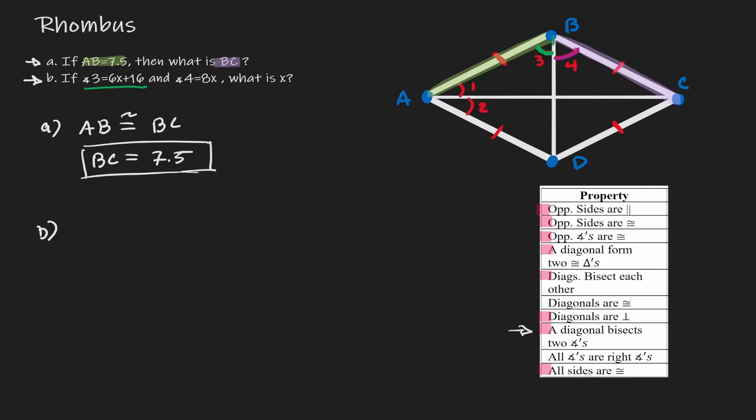If we know that this diagonal bisects angle B, then we know for a fact that angle 3 is going to be congruent to angle 4, and if they are congruent, then we can set those expressions equal to each other. So now we got that 6x plus 16 is equal to 8x, and now this becomes an equation with which we can solve.